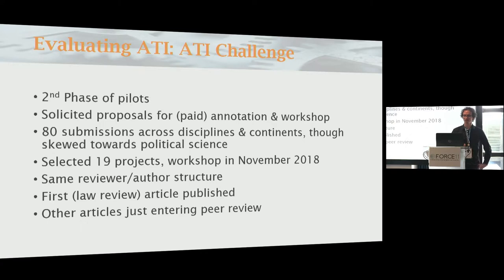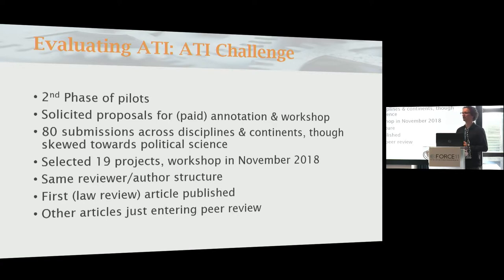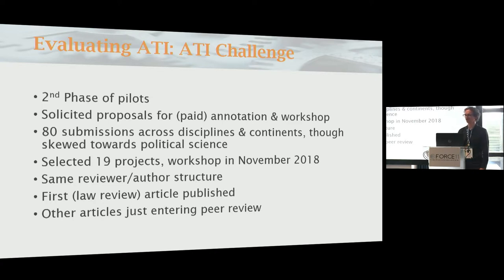Just a bit more about the second phase. We solicited proposals and paid the authors and reviewers because we didn't know how much work it was going to be — it was probably going to be a lot of work — so we got grant funding to support them. We got 80 submissions across disciplines and continents. We selected 19 projects. We had a workshop in November last year with the same reviewer-author structure. We just got the first article of that set published because it was a law review article — law reviews don't have a traditional peer review process but go through editorial review, which happens to be a lot faster. The other articles are just entering the peer review process, and we're following very closely how reviewers and review systems interact with this information and technology.